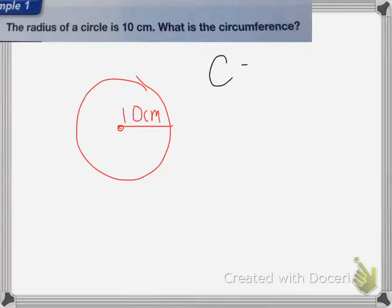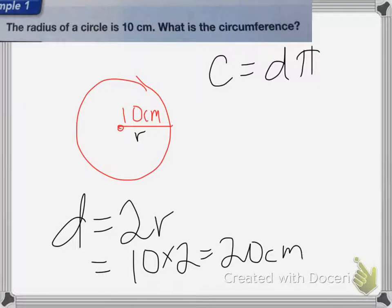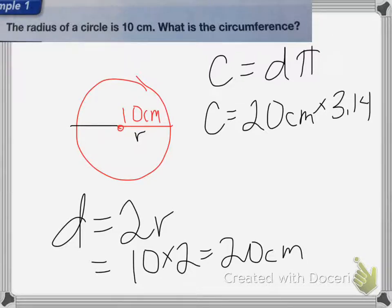And remember, circumference equals diameter times pi. So since I only have the radius, I need to find the diameter. So the diameter equals 2 times the radius. So that's going to be 10 times 2, which is equal to 20 centimeters. That's because it has to be all the way through. So my circumference is going to equal 20 centimeters. And I'm going to times that by 3.14, which is what pi is.